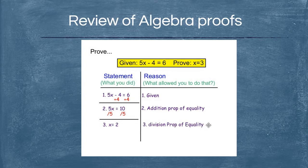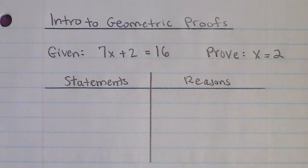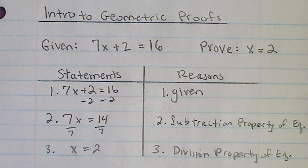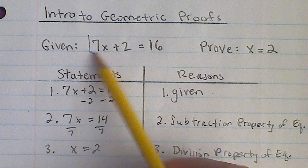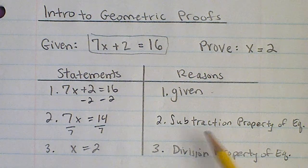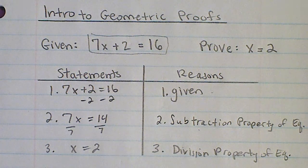Here's an example you can copy down and try on your own. Pause the video, and when you're finished resume to check your statements and reasons against mine. Once again, always start with the given information — your statement should look exactly like what they've given you. Step 2: subtract 2 from both sides, so that's the subtraction property of equality. Step 3: divide by 7 on both sides, so that's the division property of equality.